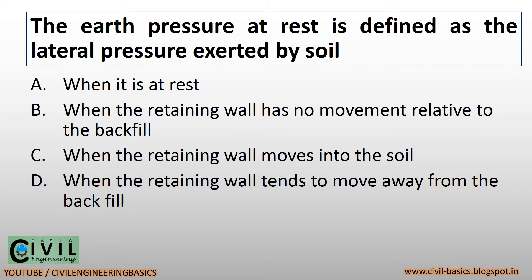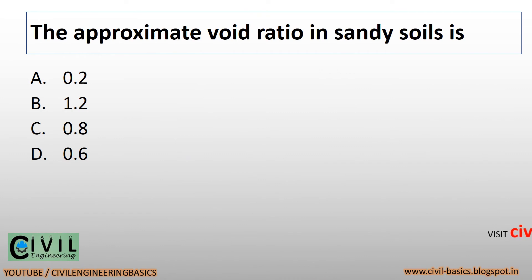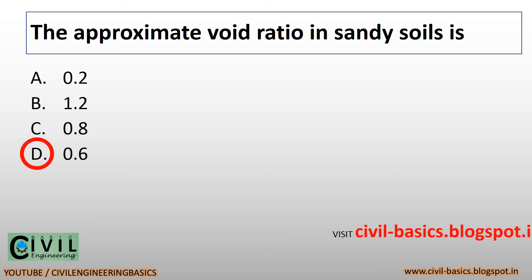The earth pressure at rest is defined as the lateral pressure exerted by soil when the retaining wall has no movement relative to the backfill. The ratio of the volume of void to the total volume of soil mass is called void ratio. The approximate void ratio in sandy soils is 0.6.